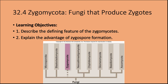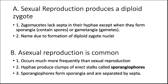Moving on to Zygomycota — fungi that produce zygotes. We'll discuss the distinguishing feature that sets Zygomycota apart, and the advantage of zygospore formation. Remember, it's a dashed line in the phylogenetic tree because they are not monophyletic. There are about a little over a thousand species — incredibly diverse. Zygomycota includes bread molds, moldy strawberries, and a few human pathogens. Sexual reproduction produces a specialized structure called the zygosporangia. The zygomycetes lack septa in their hyphae except when they form the sporangia (spores) or the gametangia (gametes). Asexual reproduction is far more common and occurs via erect stalks called sporangiophores, which form sporangia separated by septa.